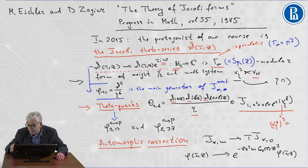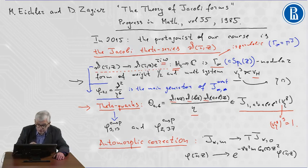If we take the product of three Theta quarks, we get a Jacobi form of weight three.